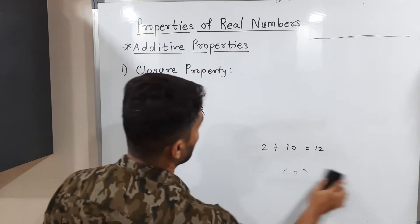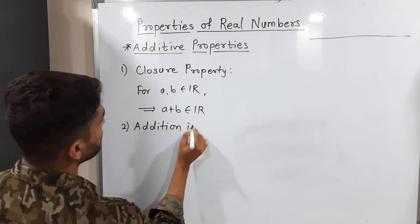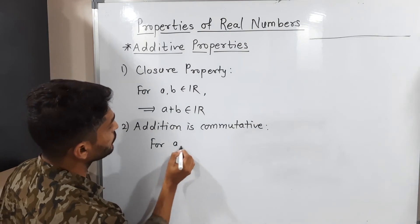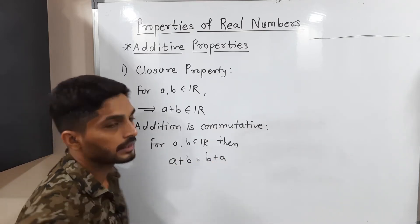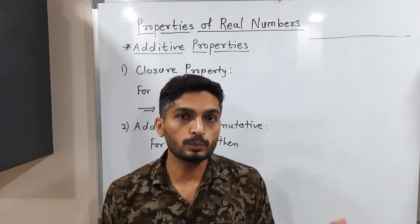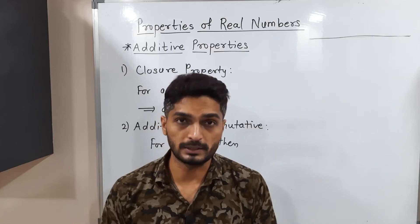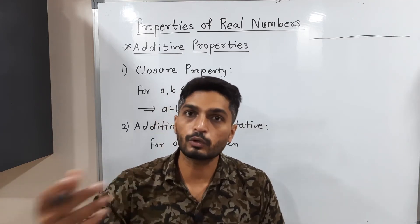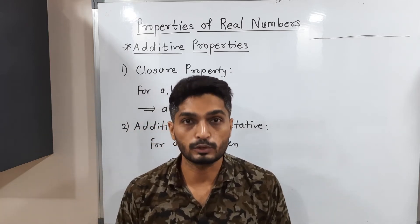The second property is commutative property — addition is commutative. For any two real numbers a, b belonging to R, a plus b equals b plus a. In real life, 2 plus 3 is the same as 3 plus 2. For example, if you purchase something for 150 rupees, you can pay 100 first then 50, or 50 first then 100 — the total is still 150. This is because addition is commutative.